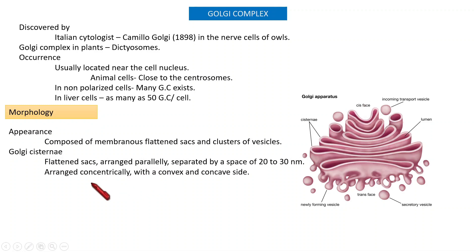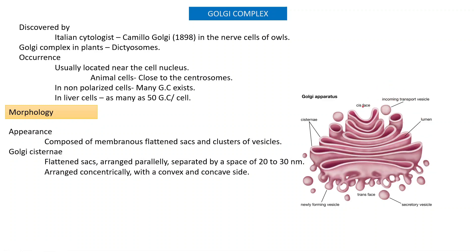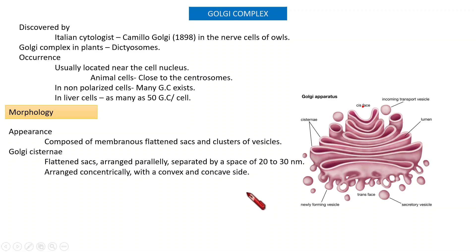The cisternae are arranged concentrically — meaning all sacks share a common center, like concentric circles. This concentric arrangement has a convex side and a concave side.